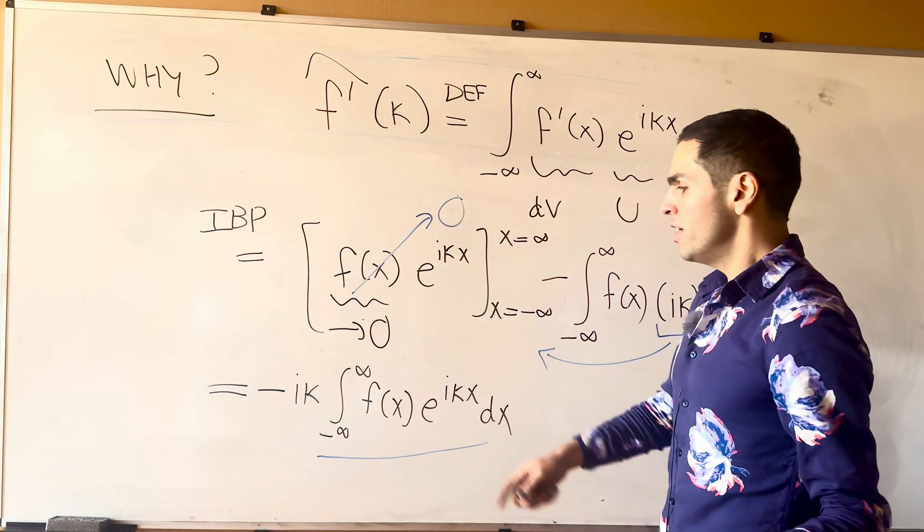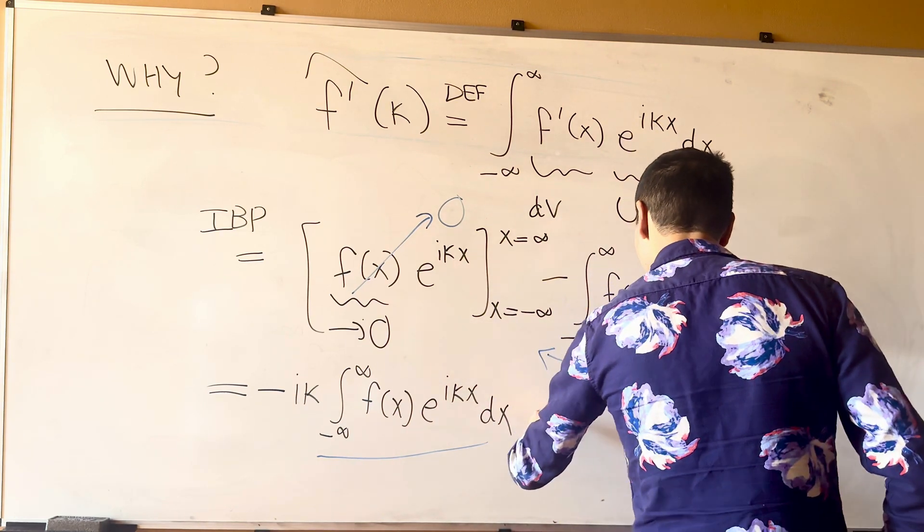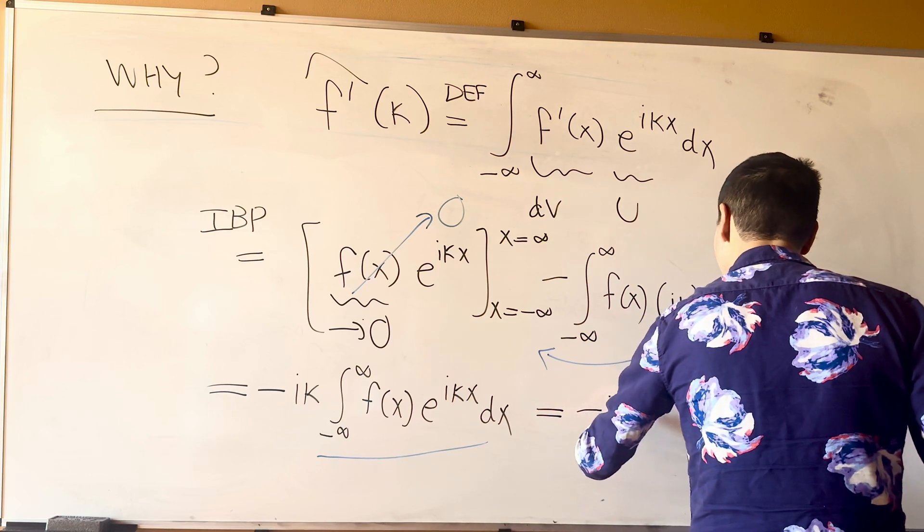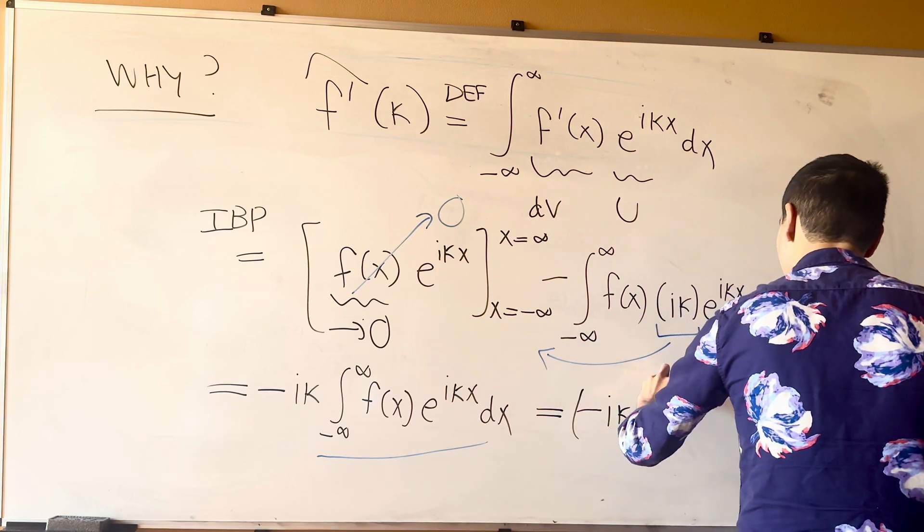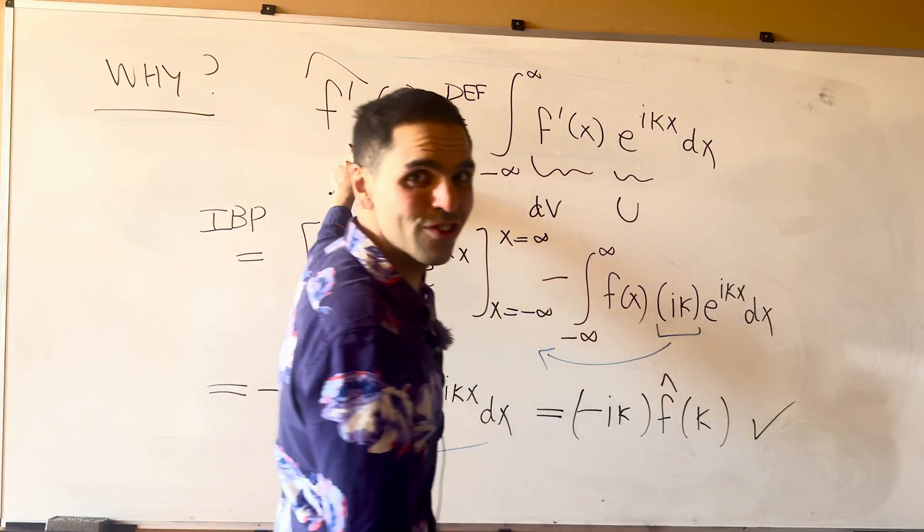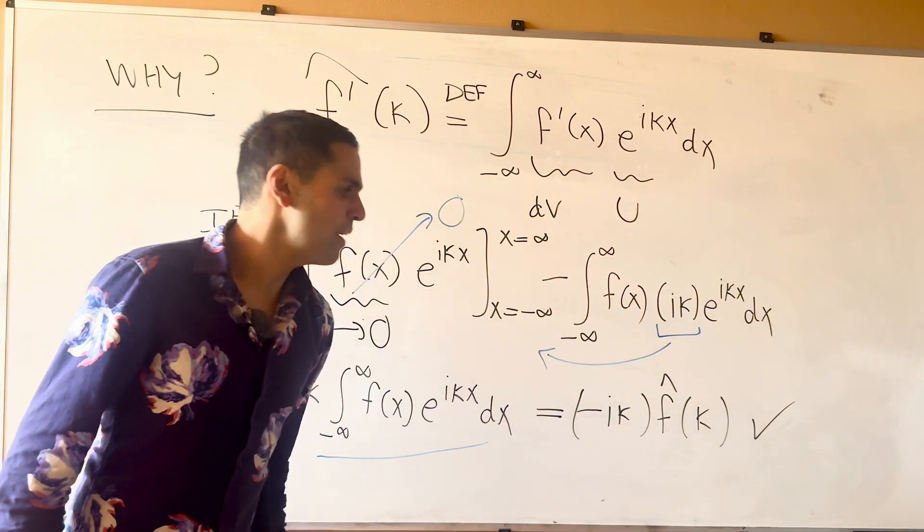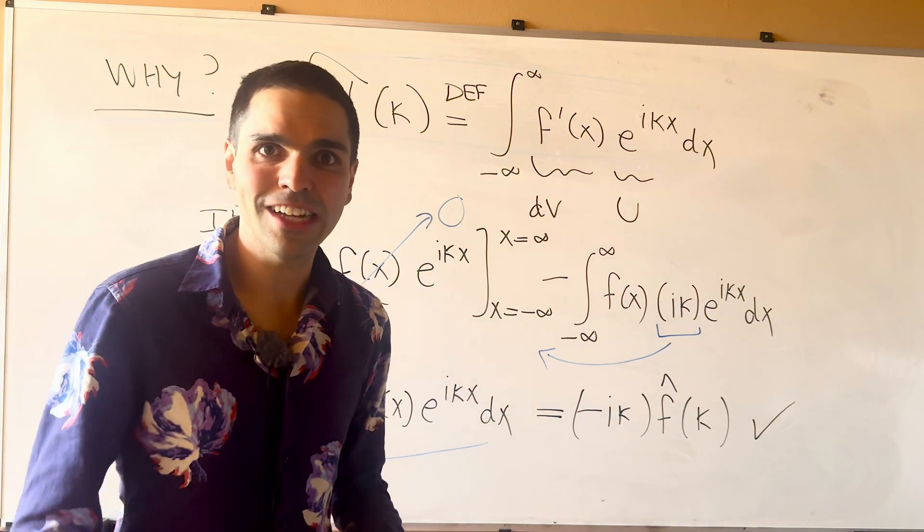because this integral is none other than f hat. So, in the end, we have minus i kappa, f hat of kappa. And that is all she wrote, because the Fourier transform of f prime is minus i kappa times the Fourier transform of f.